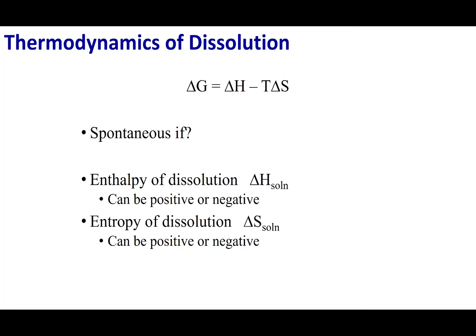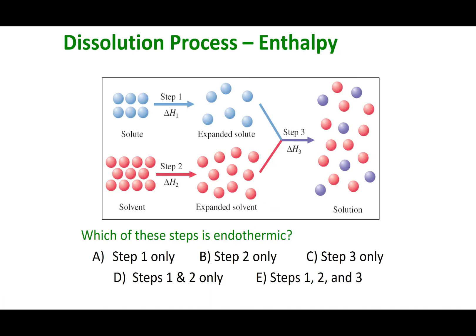Let's talk about the dissolution process. If we ask whether something is soluble in some media, we're really asking: will this happen spontaneously? To assess spontaneity, we look at delta G, the Gibbs free energy. Gibbs free energy depends on delta H and delta S. So we can examine the enthalpy of dissolution and the entropy of dissolution — both factor into whether something will dissolve or not.